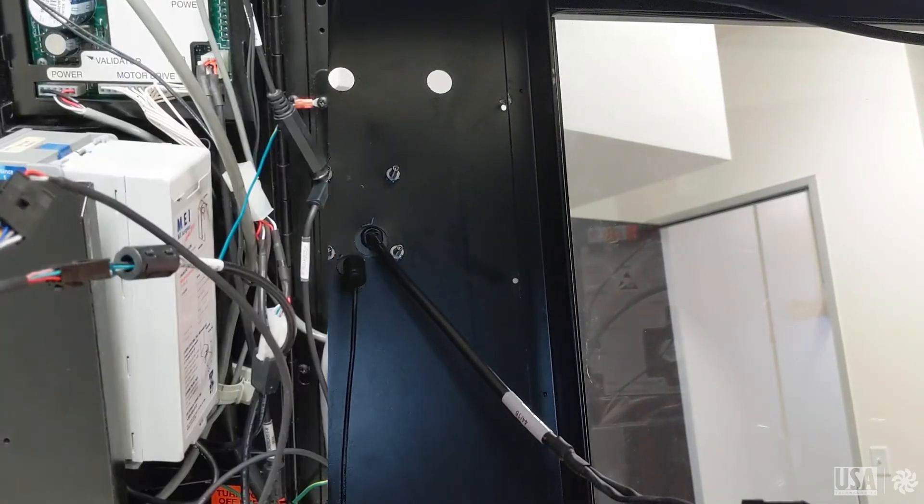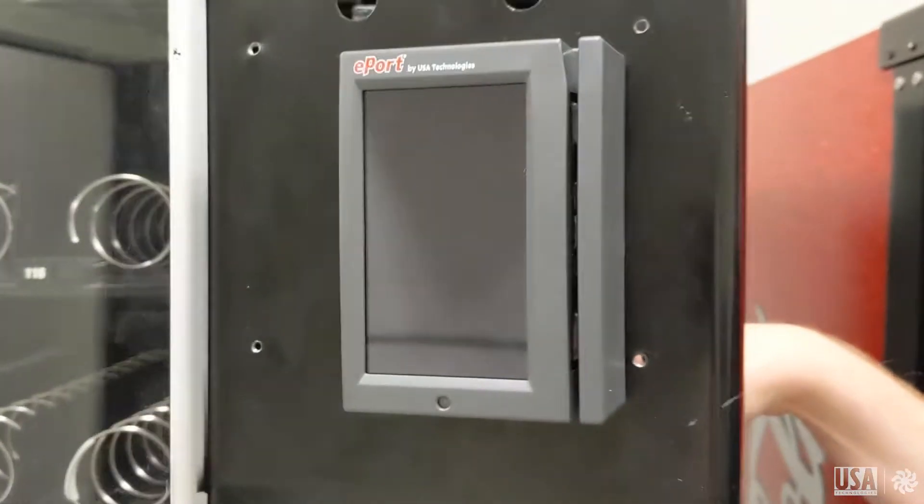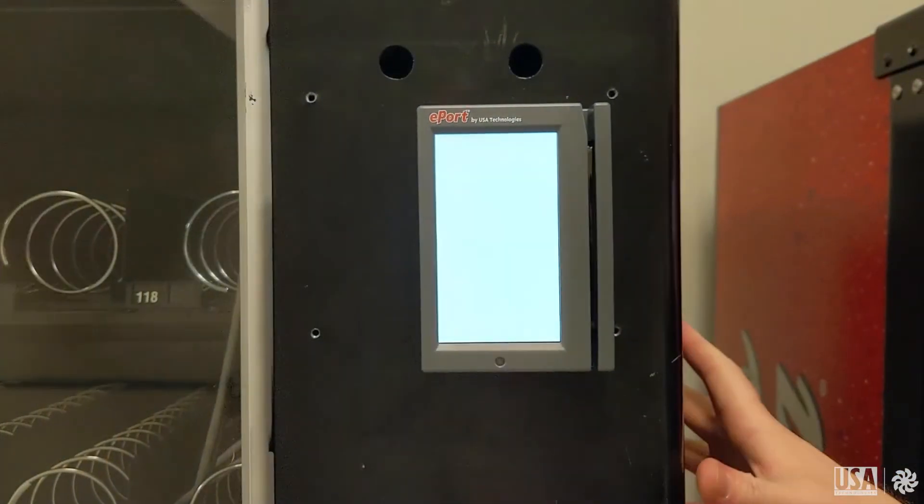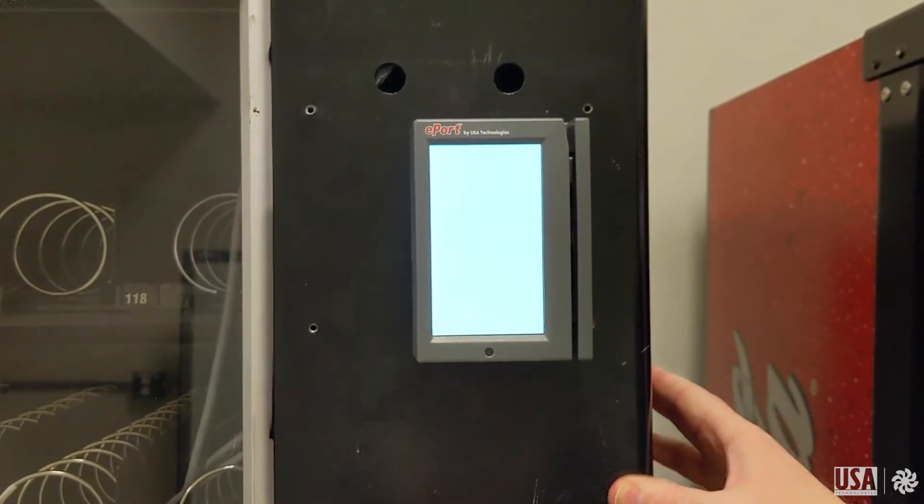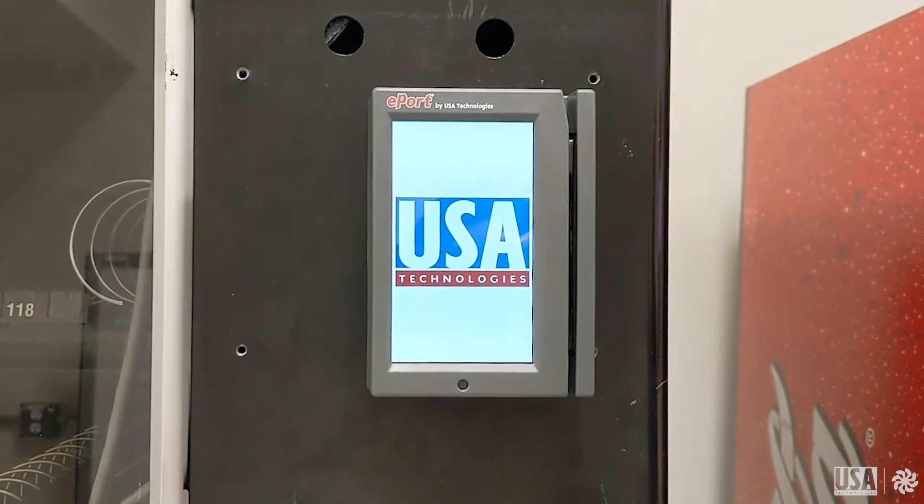We will now power on the machine and wait for the unit to come online. This might take a couple of minutes, especially if it's the first time that the unit is powering up, so be patient. As it's powering on, you will see that a USA Technologies logo does appear, and once it is fully initialized, it will go to the ready screen.